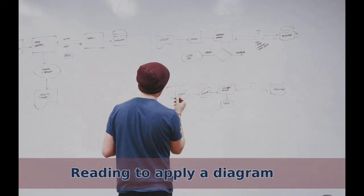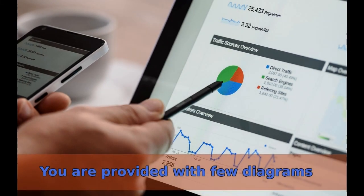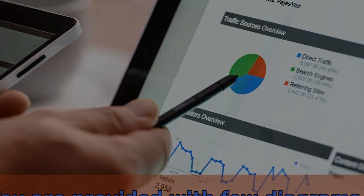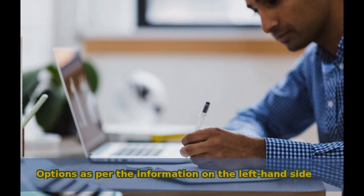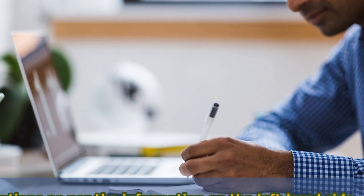Part two is reading to apply a diagram. In this section of the reading test, you are provided with few diagrams along with the relevant information on the right hand side. You are provided with options as per the information on the left hand side. Again,